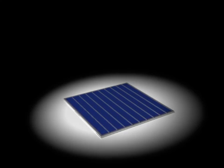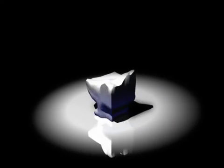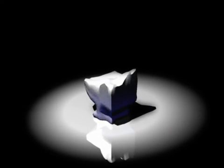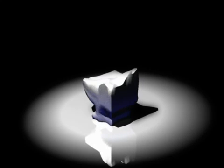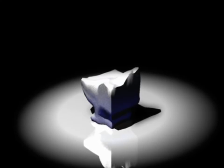Photovoltaic systems use solar cells to convert solar energy into electrical energy. Solar cells are usually made of silicon, that is a semiconductor material, which means that it can conduct electricity under some conditions but not others.